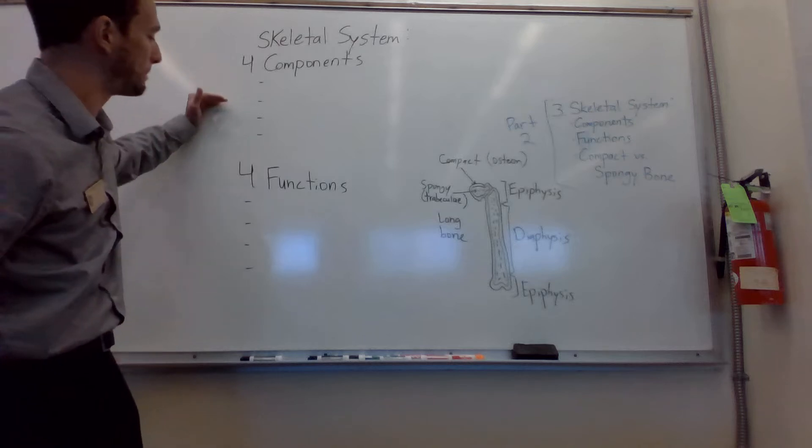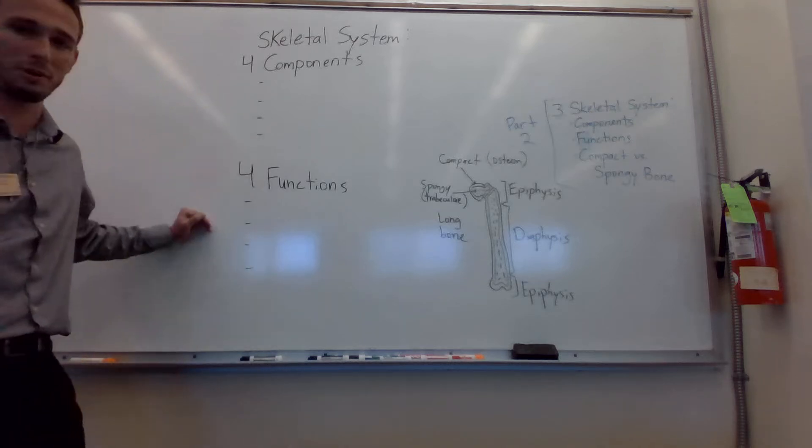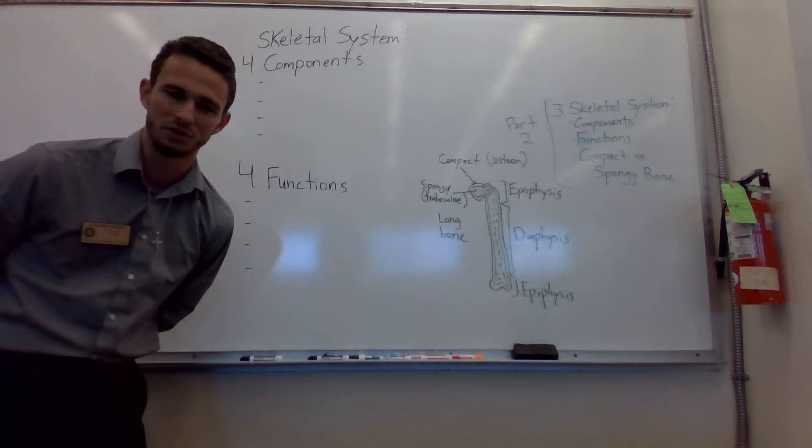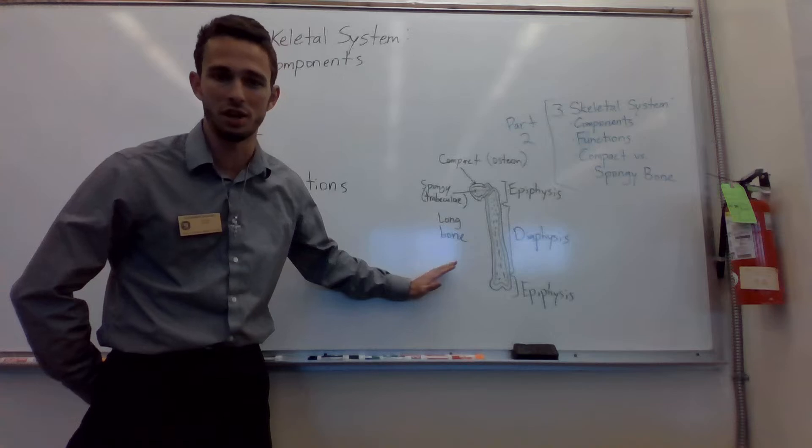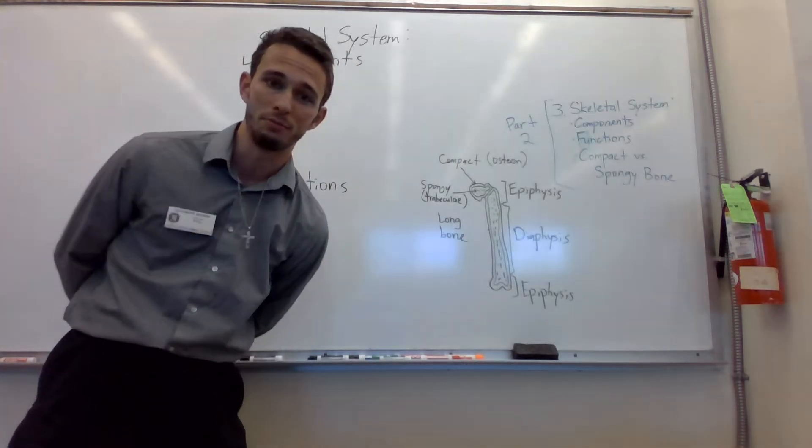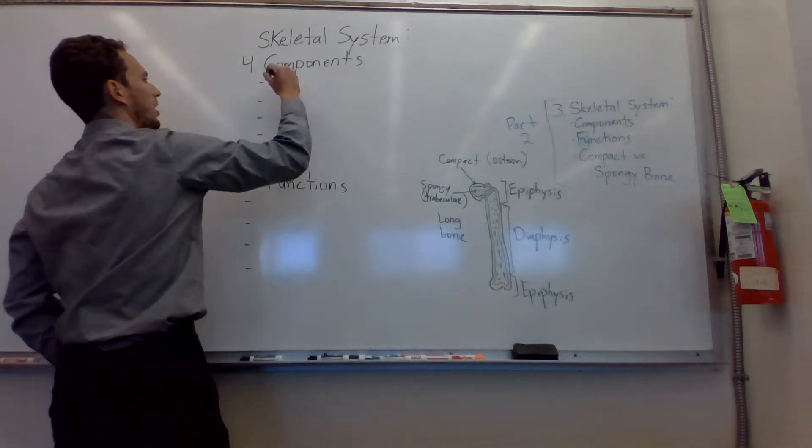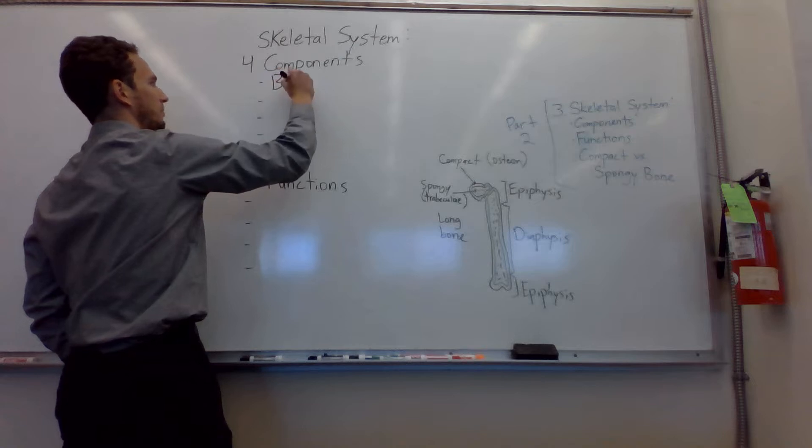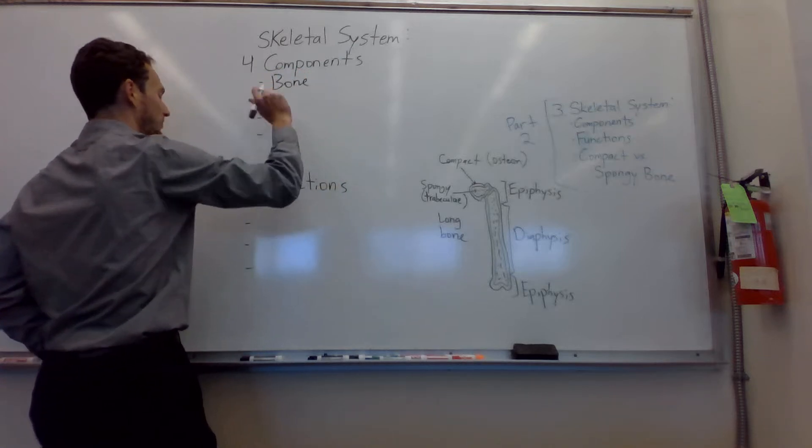Okay, so we're gonna talk about the four components of the skeletal system. You may be surprised. We'll also talk about four functions, that won't be too much of a surprise. And then I will briefly talk about a certain type of bone, which is a long bone, the components and how they are similar to the other shapes of bone. So let's get started. The four components of the skeletal system. I'll tell you the hardest one first. Bone. Get it? Hardest one, bone.